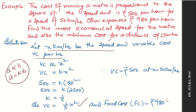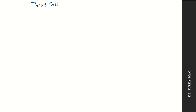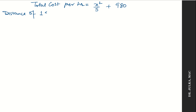The fixed cost is given as 980 rupees per hour. So the total cost per hour, which is the sum of variable cost and fixed cost, equals X²/5 + 980.